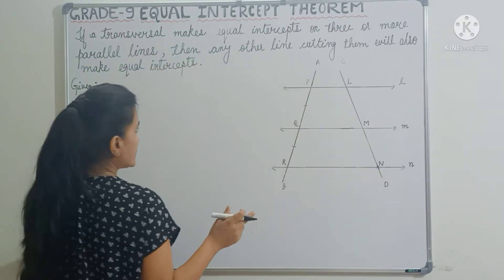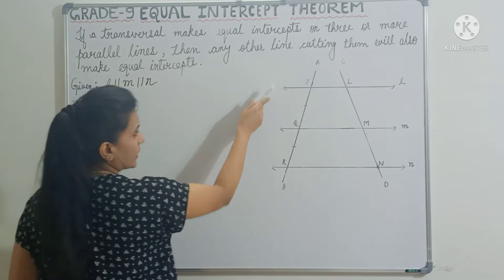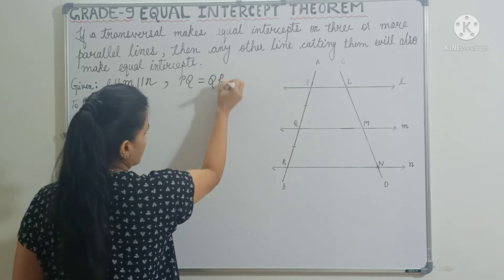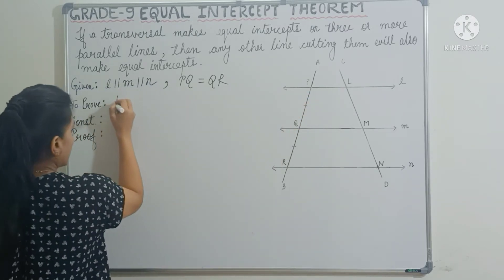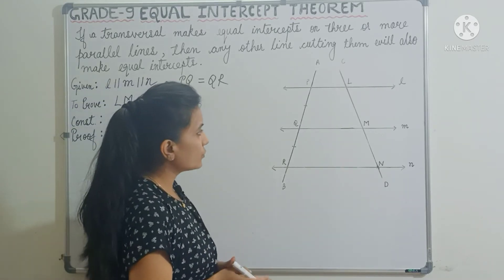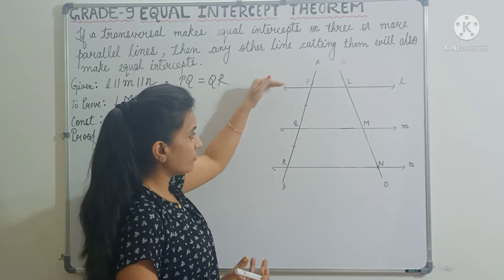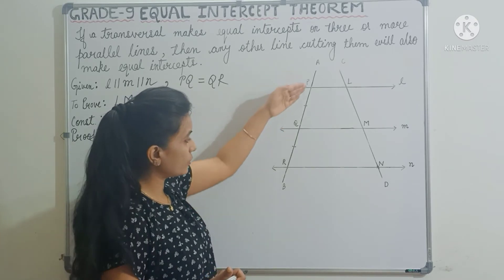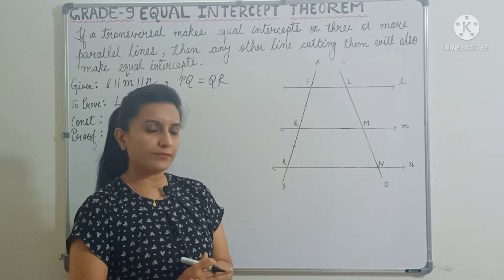So first let's write down what is given. Here L is parallel to M is parallel to N — these three lines are parallel to each other. And PQ is equal to QR. If these two are equal to each other, then we have to prove that LM will be equal to MN. Now, if you observe the given information, we have the parallel lines and we know one midpoint — Q is the midpoint of PR. If you know the midpoint theorem and its converse, you can easily do the proof.